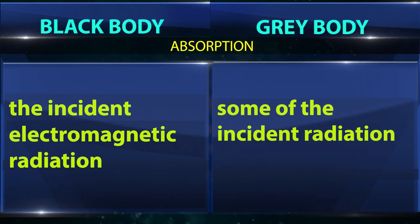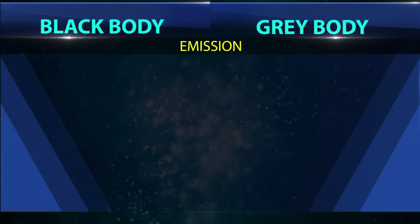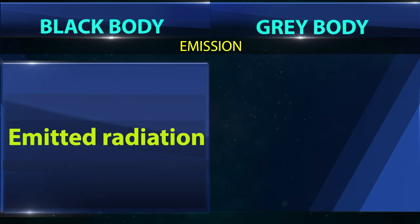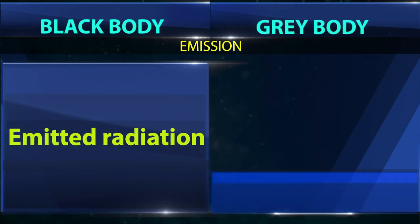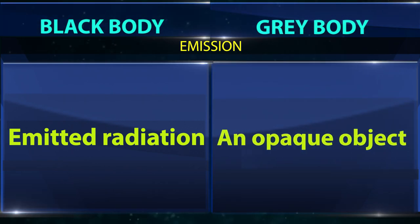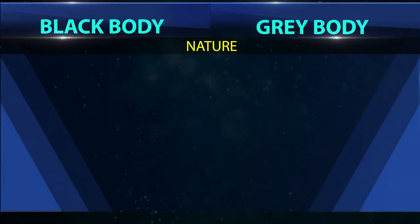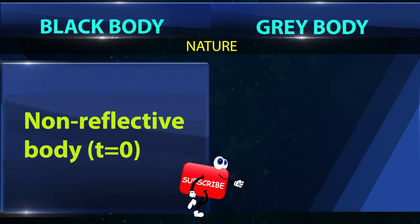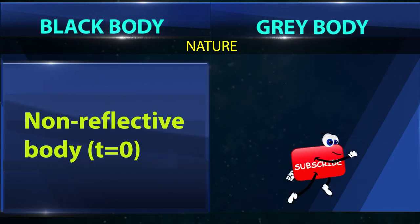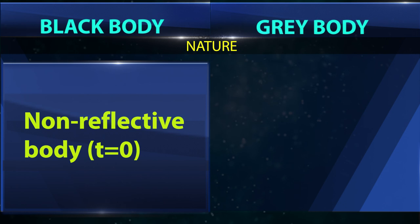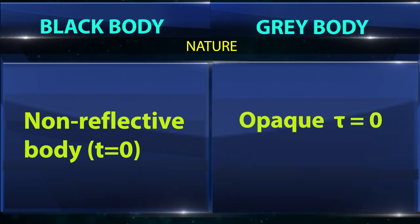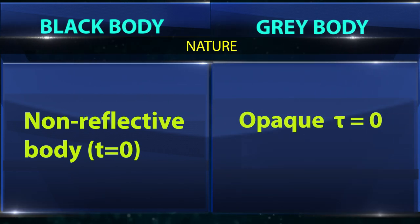Emission — black body: the emitted radiation is known as black body radiation. Emission — gray body: a gray body is considered as an opaque object. Nature — black body: it is a non-reflective body; transmissivity t is equal to zero. Nature — gray body: opaque; transmissivity t is equal to zero.